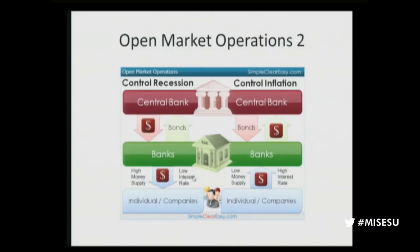The right side you can almost ignore, because the central bank almost never decreases the money supply. That shows when they sell bonds back to banks — the banks pay them by having their reserve deposits written down. It's all done in cyberspace.